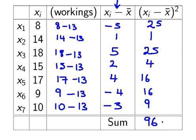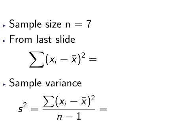So that's the hardest part of the calculation done. The sample size is 7. And from the last slide, the sum of the squared deviations is 96.